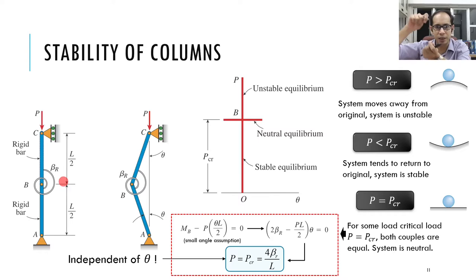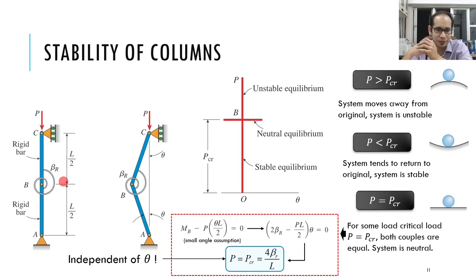This hypothetical spring-bar example was used to explain the buckling phenomenon intuitively. What we are going to do next is follow what was already done in the 1700s by Dr. Euler, who derived the classic equations for the buckling of columns. Next, we will look at the Euler formula for column buckling.